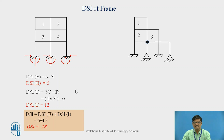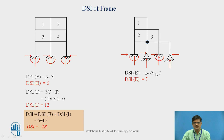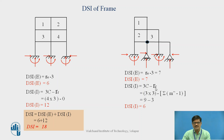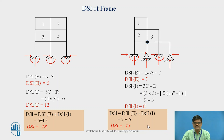Let us go for one more example. Finding reactions first — based on that, external indeterminacy = RE minus 3. Here reactions are total 10, so 10 minus 3 gives external indeterminacy of 7. For internal indeterminacy, 3C minus RR — we have 3 loops, so 3 into 3 = 9. Released reaction is M'' minus 1: at the internal hinge, 4 members are meeting, so 4 minus 1 = 3. Therefore, 9 minus 3 = 6 for internal indeterminacy. Total degree of static indeterminacy = 7 plus 6 = 13.